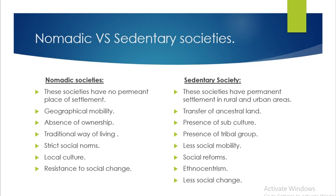Sedentary societies have permanent settlement in rural and urban areas. In these societies there is a permanent place for living, transfer of ancestral land, presence of subcultures, presence of rebel groups, less social mobility, social reform, and evolution of other cultures.